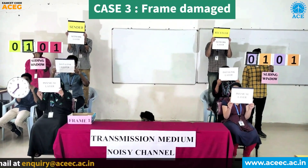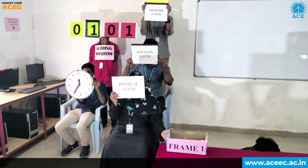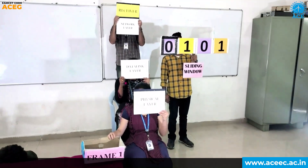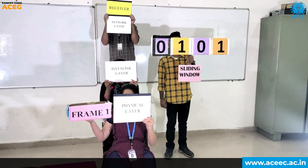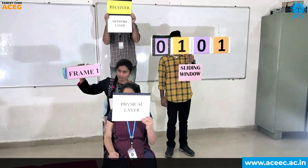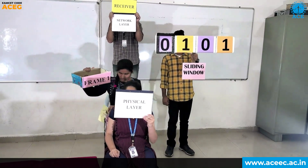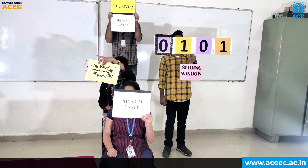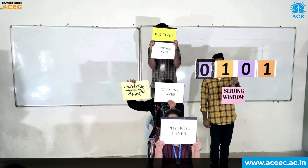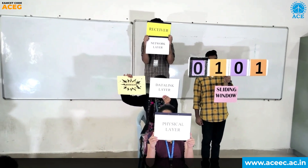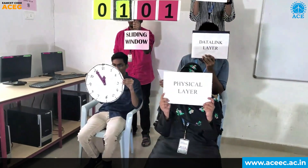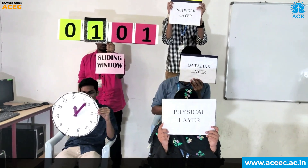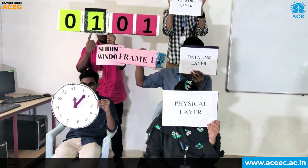Case 3: The received frame is damaged. The sender physical layer transmits frame 1 via transmission medium. The receiver physical layer accepts frame 1 and hands it over to the data link layer. The data link layer checks the frame and identifies that it is damaged — it has some errors — so it discards the frame and does not accept it. As no acknowledgement is sent by the receiver, this eventually causes the timer at the sender side to timeout, and the data link layer retransmits frame 1, handing it over to the physical layer.